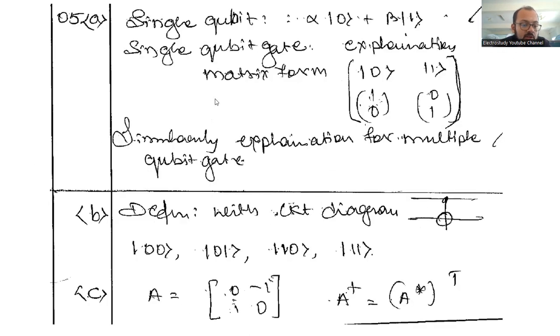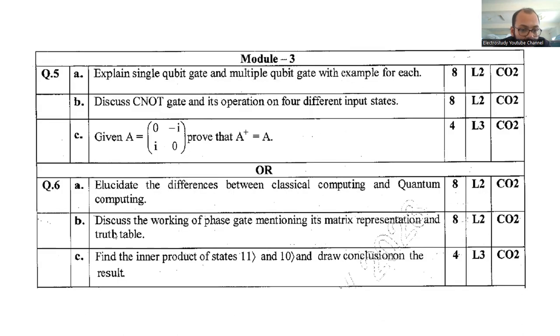Question number six B, I have to explain. Now discuss the working of phase gate monitoring in matrix representation and the truth table. So it is related to computer science people.